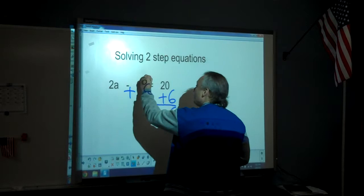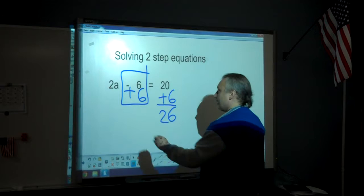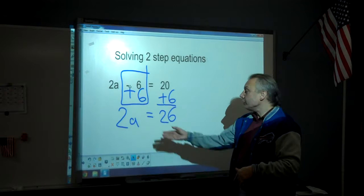As a reminder, because this is something I talk to some of you about on your work, when you have the minus six and the plus six, they cancel out and go away. You do not need to write a zero on that side. It just vanishes. The purpose of this step is to make it vanish. So you are left with 2a equals 26.